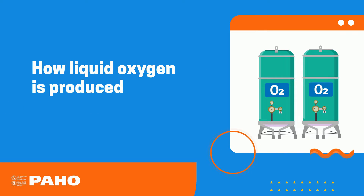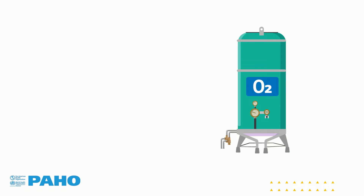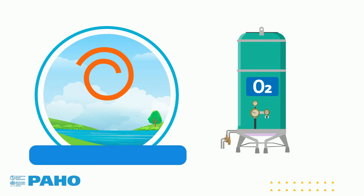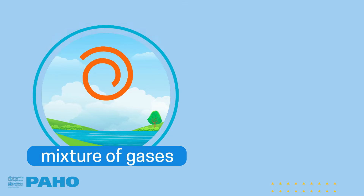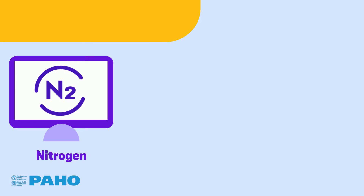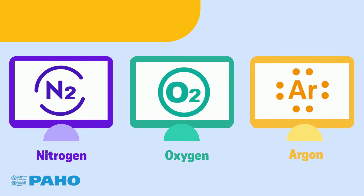Liquid oxygen can be produced from atmospheric air, which is a mixture of gases. Nitrogen, oxygen, and argon are the main components of the mixture.